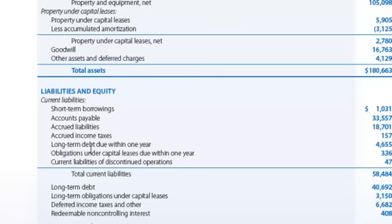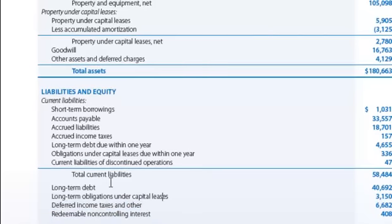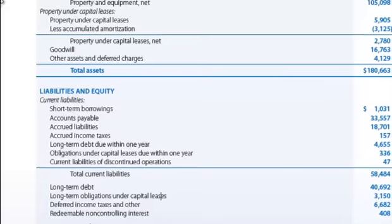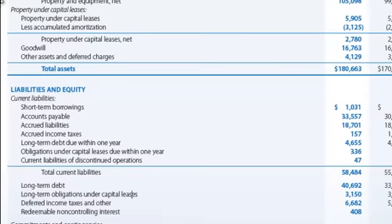But you can see if we look at Walmart's actual report, they have 'Deferred income tax and other.' Let me move this over so you can see the numbers are accurate — this is exactly what you're looking at on Yahoo Finance. The figure here is 6,682. Now let's look at the actual numbers on Yahoo Finance.